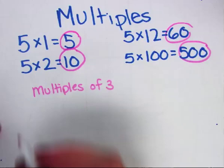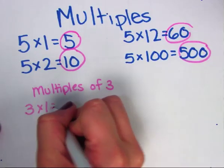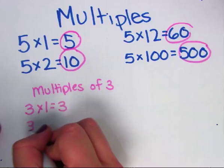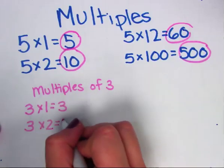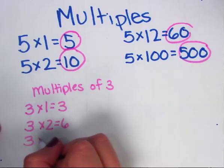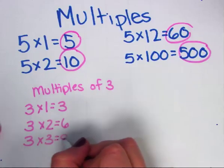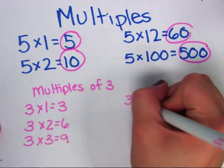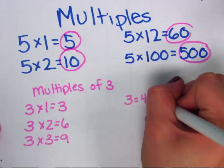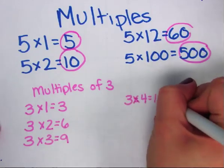The easiest way to do it is to go in order. 3 times 1 equals 3, 3 times 2 equals 6, 3 times 3 equals 9. And I would keep doing this for about 10 numbers until I get a decent amount of multiples.